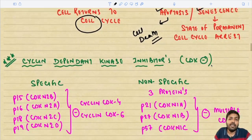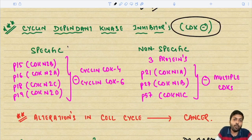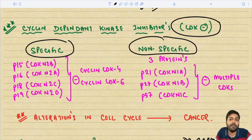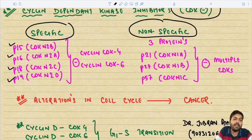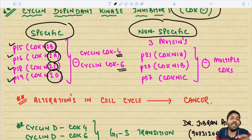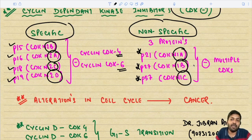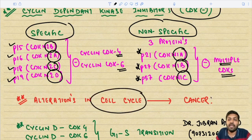Cyclin-dependent kinase inhibitors fall into two groups. The specific group contains p15, p16, p18, and p19 — called CDKN2B, 2A, 2C, and 2D respectively — which specifically inhibit cyclin D/CDK4 and cyclin D/CDK6 complexes. The non-specific group contains p21, p27, and p57 — called CDKN1A, 1B, and 1C respectively — which inhibit multiple varieties of cyclin-dependent kinases. Alterations in the cell cycle have been implicated in cancer.